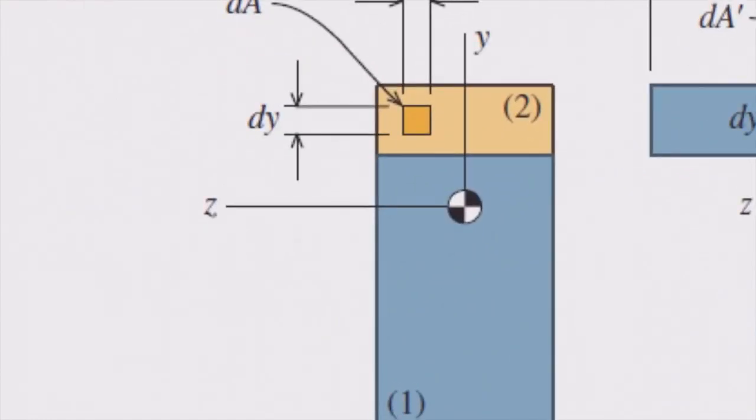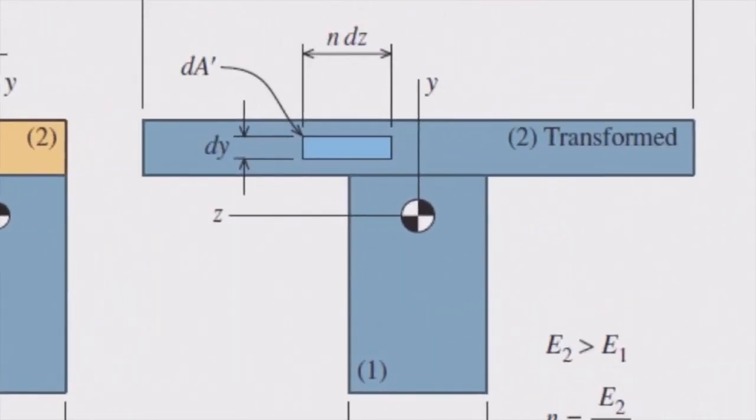Look at this beam made of two different materials. Again, I assume the top part has higher modulus of elasticity compared to the bottom one. We know the stress distribution is not uniform. We want to make it uniform. To make it uniform, we transform this section into a section made from just one material.